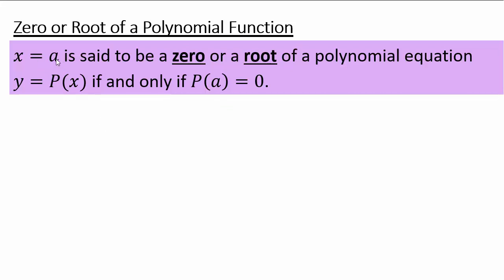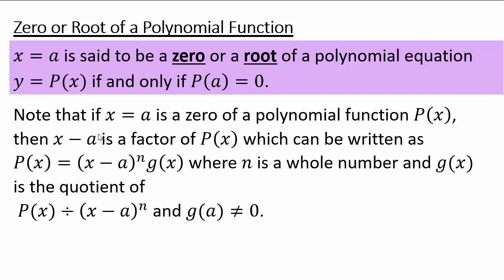If x equals a is a zero, then x minus a is a factor of p(x), and we can factor x minus a as many times as possible, leaving p(x) as a product of (x minus a) to the power n times g(x), where g(x) is the quotient of p(x) divided by (x minus a)^n. Substituting x equals a into g(x) gives a nonzero result, because if it were zero, we could factor out x minus a again — but we already pulled out the maximum number of such factors.